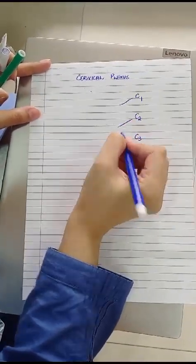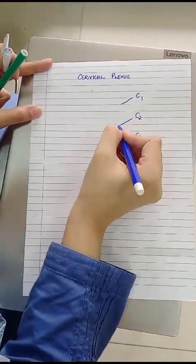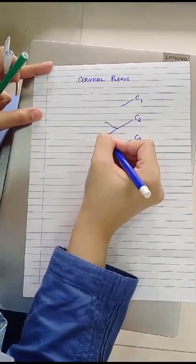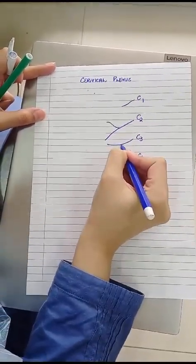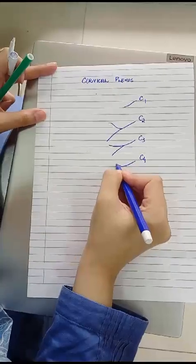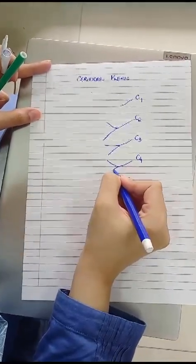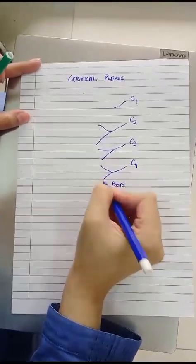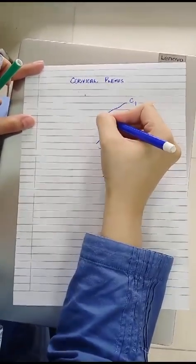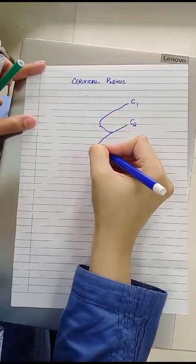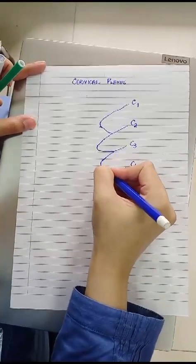After this, each cervical spinal nerve except for C1 divides into ascending and descending branches. So you can see these are the ascending and descending branches of C2, C3, and C4 respectively. These branches unite together in a fashion that they form the primary loops of the cervical plexus.